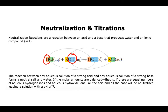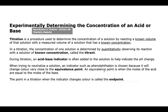So if you have equal amounts of acid and equal amounts of base, you will end up with a completely neutral reaction. If your hydroxide ions and your hydrogen ions are equal — there are equal numbers of those — you'll end up with a neutral solution, a solution that has a pH of 7.